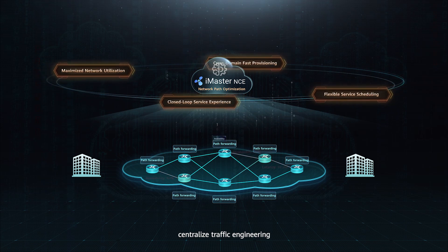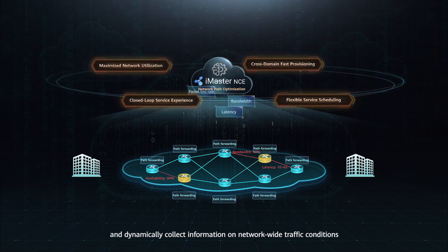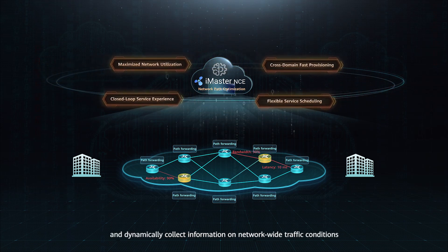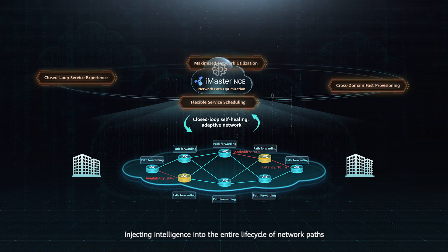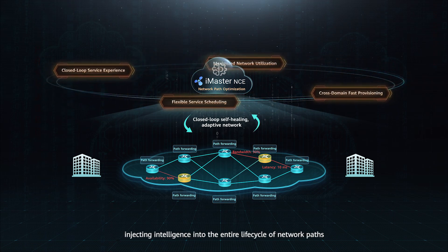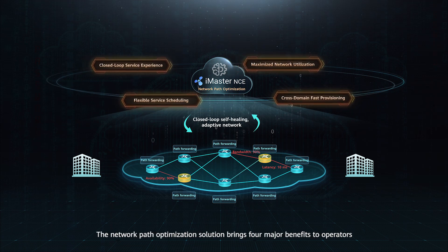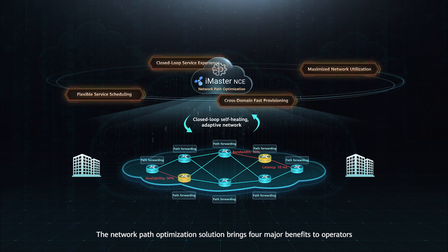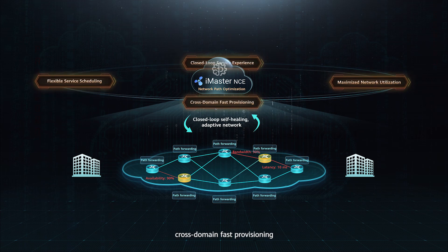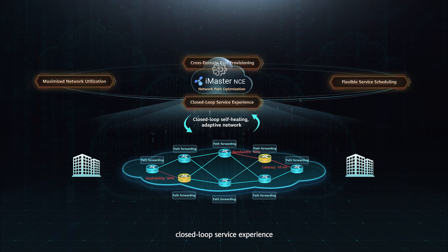The solution centralizes traffic engineering and dynamically collects information on network-wide traffic conditions, injecting intelligence into the entire life cycle of network paths. The Network Path Optimization Solution brings four major benefits to operators: cross-domain fast provisioning, maximize network utilization, closed-loop service experience, and flexible service scheduling.